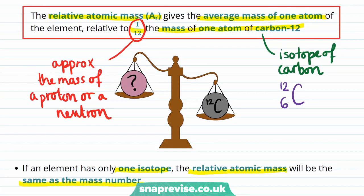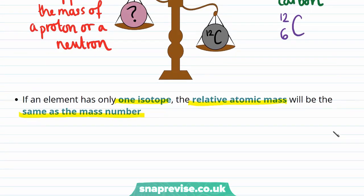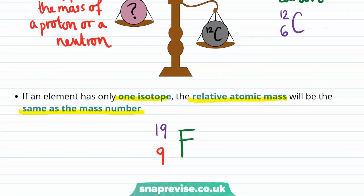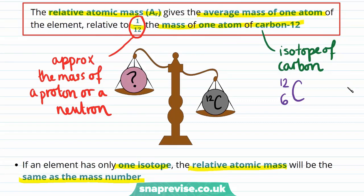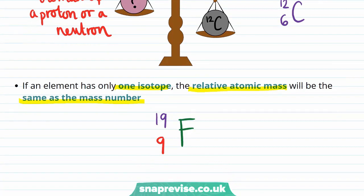Remember that different isotopes of an element will have exactly the same number of protons, but a different number of neutrons. An example of an element that only has one isotope is fluorine, which has the chemical symbol F. The mass number of fluorine is 19 and its atomic number is 9, telling us that an atom of fluorine contains 9 protons in the nucleus and 10 neutrons, as the number of neutrons is the difference between the mass number and the atomic number. As the relative atomic mass gives us the mass of one atom of the element relative to the approximate mass of a proton or a neutron, if the element only has one isotope, its relative atomic mass is just the number of protons and neutrons in the nucleus of the atom of that element.